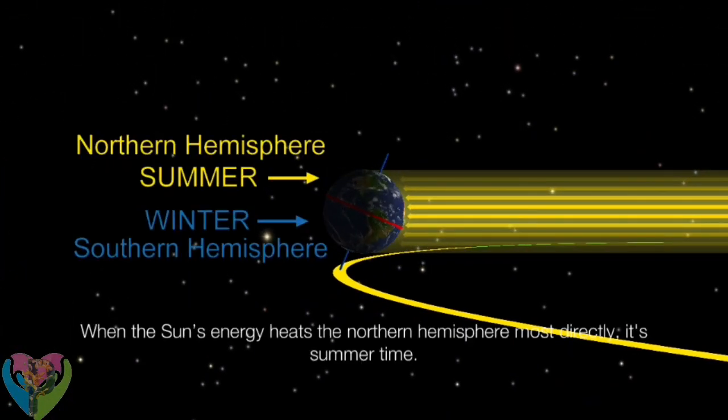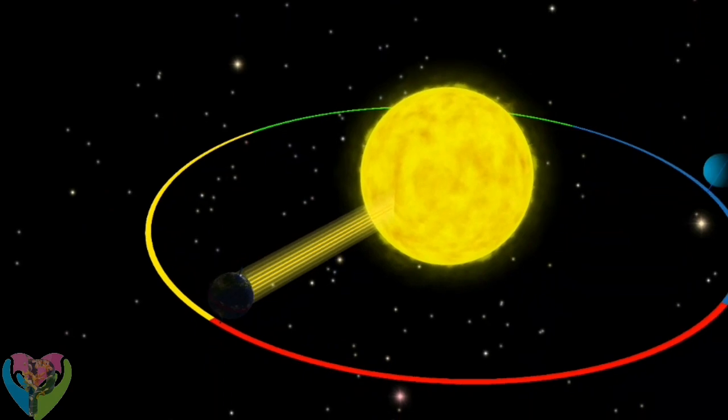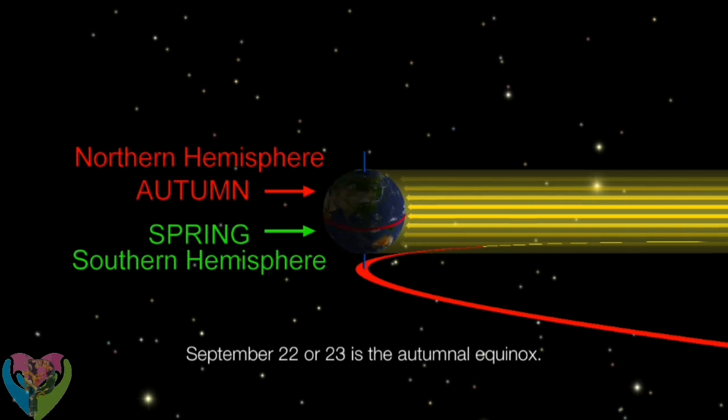When the Sun's energy heats the northern hemisphere most directly, it's summertime. September 22nd or 23rd is the autumnal equinox.